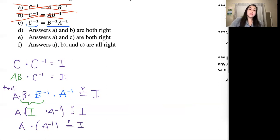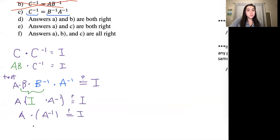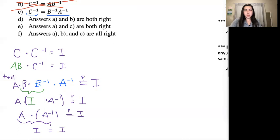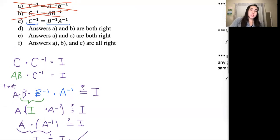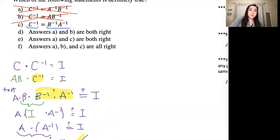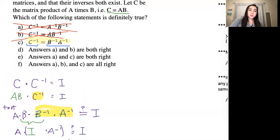We're back to that same rule: we have A times its inverse, so A times A inverse equals I. We copy the rest down, and now we have I equals I — that is indeed a true fact, it has to equal itself. So that means this substitution was true, which means option C is correct: C inverse equals B inverse times A inverse.